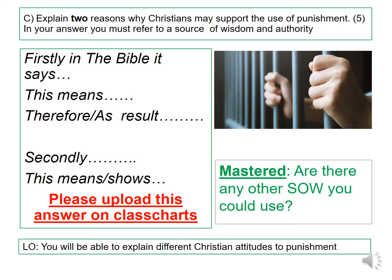You are now going to practise a GCSE C question — this is a five-mark question. Your question is: explain two reasons why Christians may support the use of punishment. Remember, because this is a C question, you need to include a source of wisdom. Your sentence starters are on the left: 'Firstly, in the Bible it says... This means... therefore / as a result...' Then do a point and development for the second paragraph. Your master task: are there any other sources of wisdom you could use other than the ones we have learnt in today's lesson? Can you think of any from other topics?